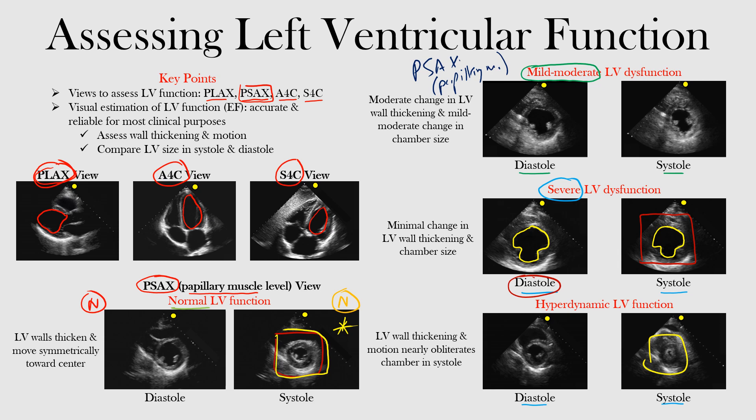In hyperdynamic LV function, the chamber goes from normal diastolic size to even smaller than normal in systole — essentially obliterating the chamber. This is beyond normal function. This entire assessment is a visual estimation of LV function, different from a formal transthoracic or transesophageal echo. This is bedside point-of-care ultrasound used in the acute setting or on rounds.